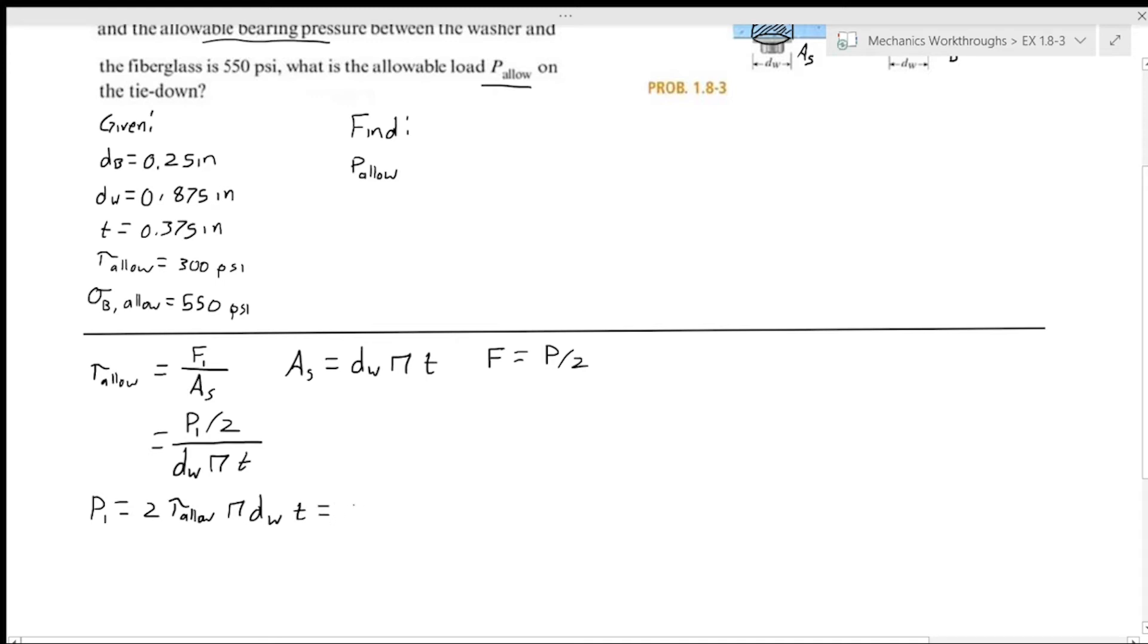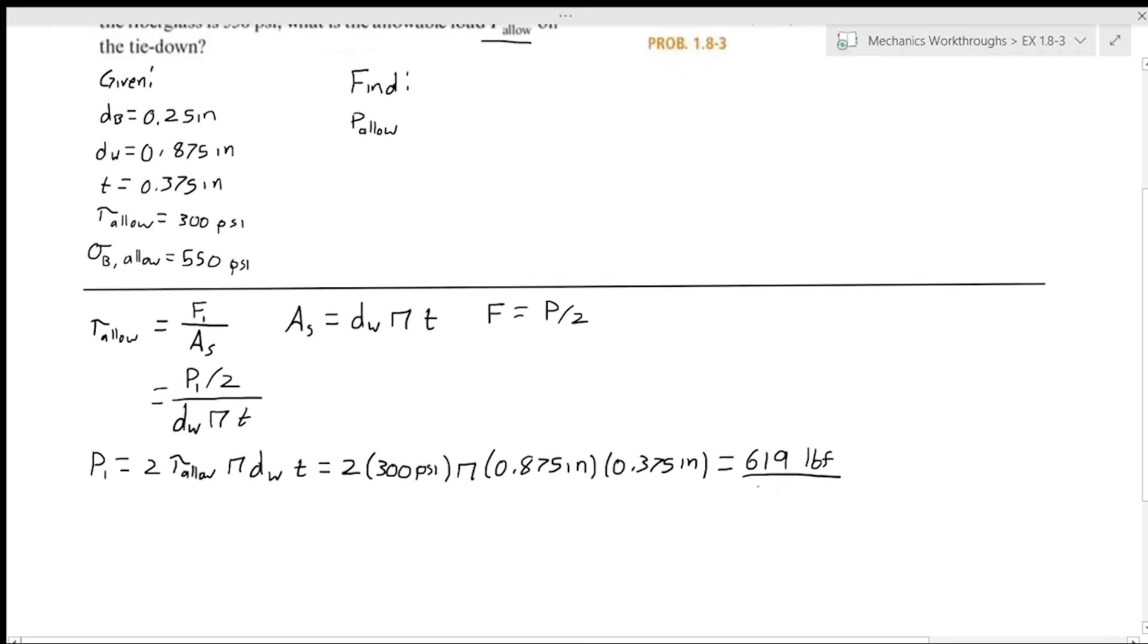And this is equal to, let me plug in all the numbers: 2 times 300 psi times pi times 0.875 inches times 0.375 inches. When we plug this into our calculator, we get 619 pound force. We give this a single underline because it is an intermediary answer, not our final answer.